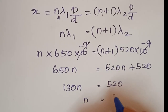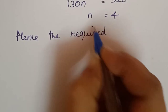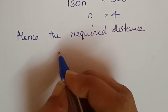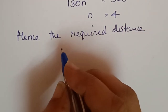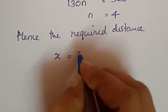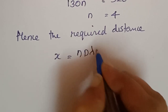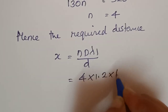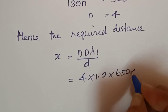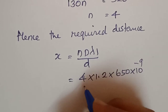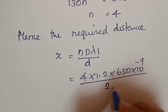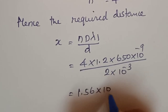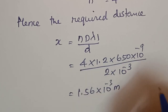Since at this point both bright fringes coincide, the least distance from the central maximum is x equals n D lambda 1 divided by small d, which is equal to 4 into 1.2 into 650 into 10 to the power minus 9, divided by 2 into 10 to the power minus 3, which is equal to 1.56 into 10 to the power minus 3 meter, which is equal to 1.56 millimeter.